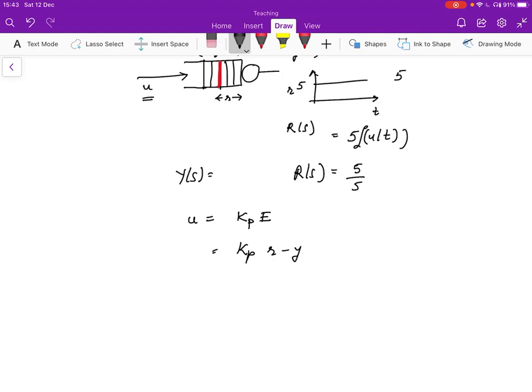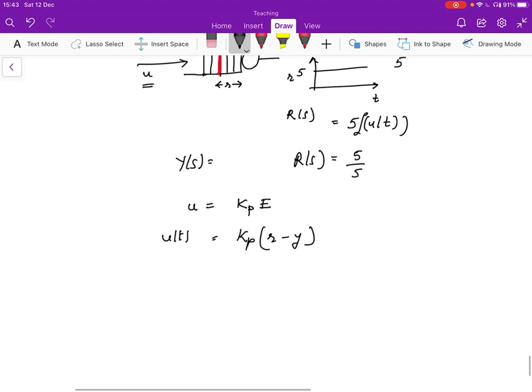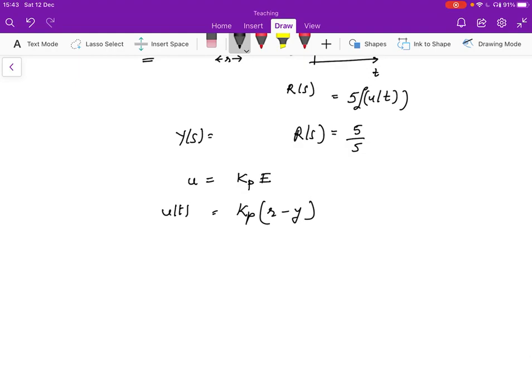And I'm just doing all of this in time domain. So here is basically I'm saying U of T is Kp times R of T minus Y of T. And for Kp, we choose the value one over tau.